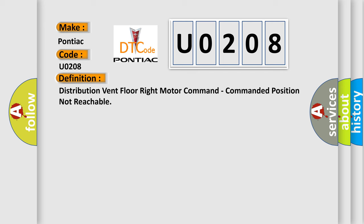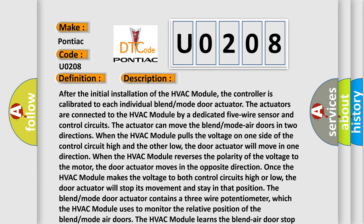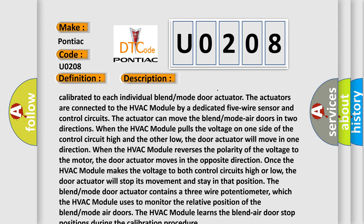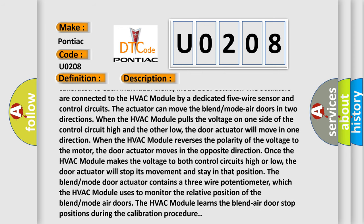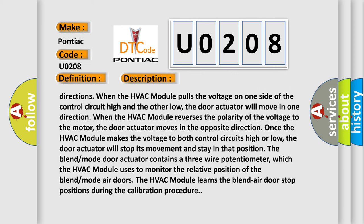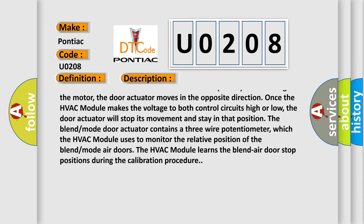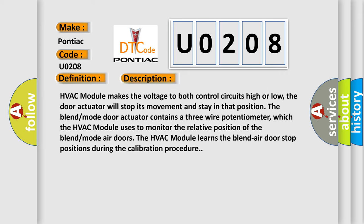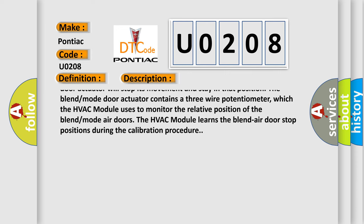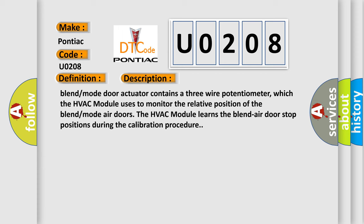After the initial installation of the HVAC module, the controller is calibrated to each individual blend mode door actuator. The actuators are connected to the HVAC module by a dedicated five-wire sensor and control circuits. The actuator can move the blend mode air doors in two directions when the HVAC module pulls the voltage on one side of the control circuit high and the other low. The door actuator reverses direction when the HVAC module reverses the polarity of the voltage to the motor. Once the HVAC module makes the voltage to both control circuits high or low, the door actuator stops and stays in that position. The blend mode door actuator contains a three-wire potentiometer, which the HVAC module uses to monitor the relative position of the blend mode air doors. The HVAC module learns the blend air door stop positions during the calibration procedure.